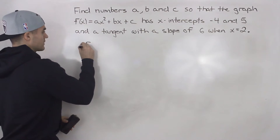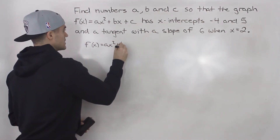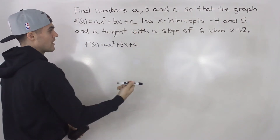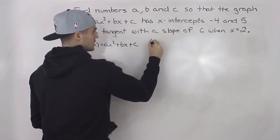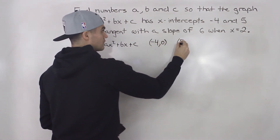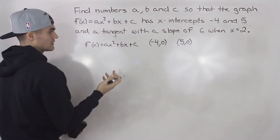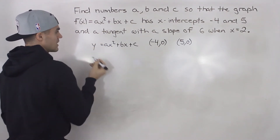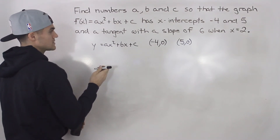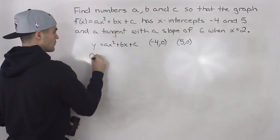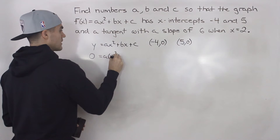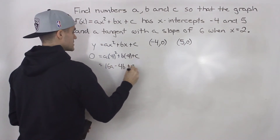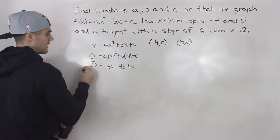So we have f of x equals ax squared plus bx plus c. Let's try to create some expressions. We're told that this function has x-intercepts negative 4 and 5. That means the function is going to go through the points negative 4 and 0, and 5 and 0. We can actually create two expressions from that. So we plug in 0 for y and negative 4 for x, giving us 16a minus 4b plus c equals 0. That is one expression.